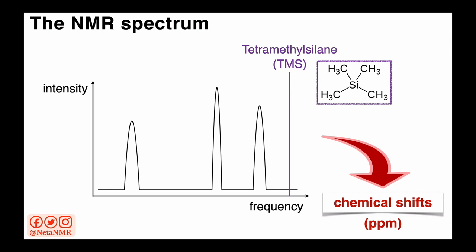We can record these kinds of spectra for many other nuclei, not just hydrogens. Another one that is often used, especially for studying organic molecules, is carbon. But there are many other nuclei that are used in NMR.